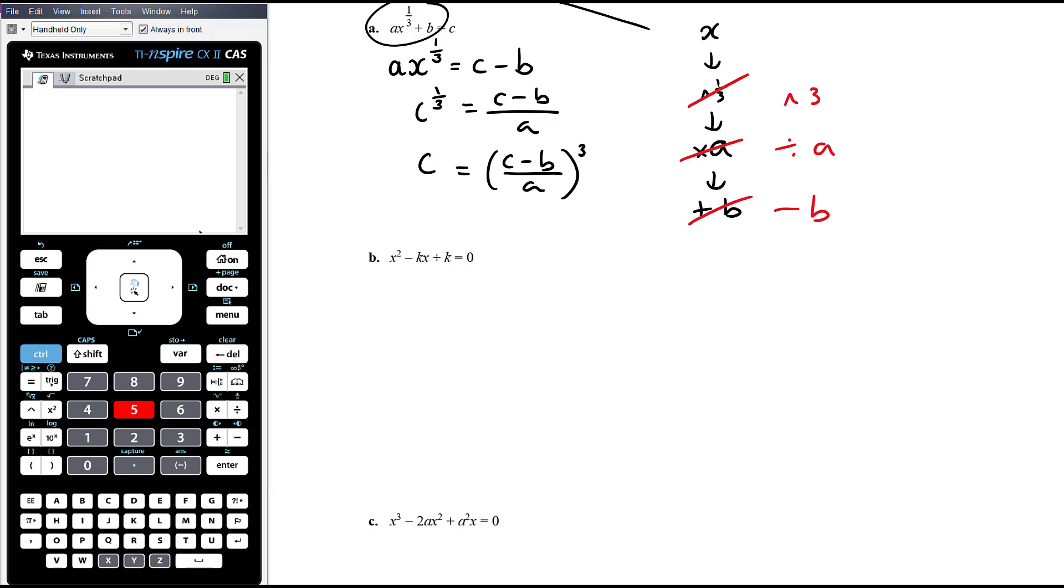Okay, part b can't just be solved by rearrangement because we've got x in two places. It's a quadratic, but there's unknown coefficients. You could complete the square here. Personally, I wouldn't bother. I'd use the quadratic formula. So in this instance, quadratic formula a is 1, b is negative k, and c is k.